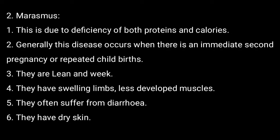Marasmus: This is due to deficiency of both proteins and calories. Generally this disease occurs when there is an immediate second pregnancy or repeated childbirth. They are lean and weak. They have swollen limbs, less developed muscles. They often suffer from diarrhea. They have dry skin.